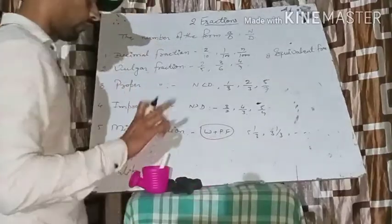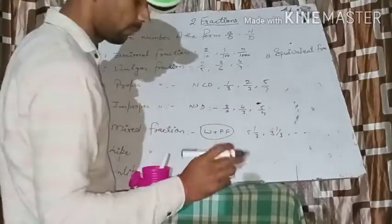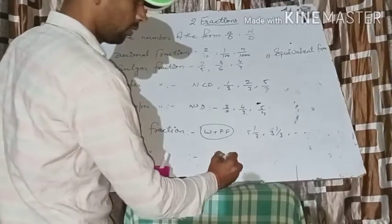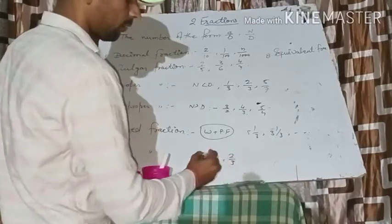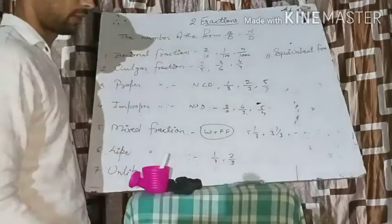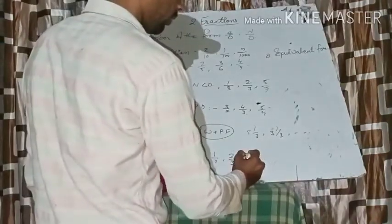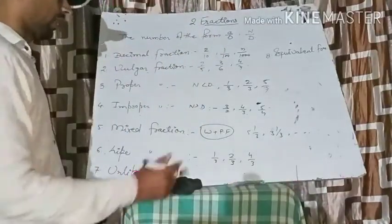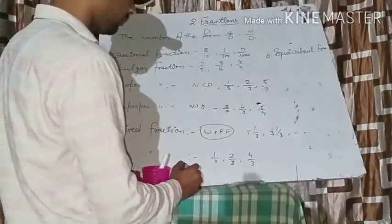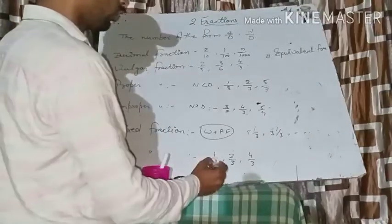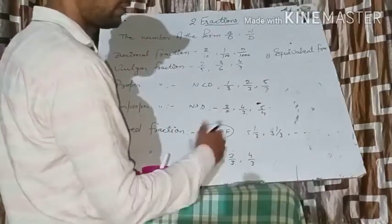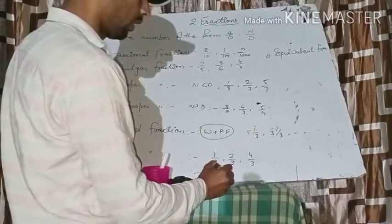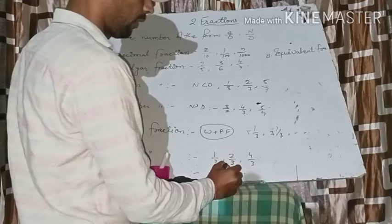Like fractions are those fractions in which the denominator must be the same. For example, one upon three and two upon three are like fractions, and four upon three as well. In unlike fractions, the denominators are different — for example, two upon three and four upon five or seven upon nine.